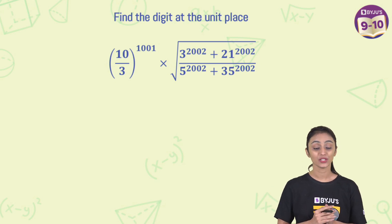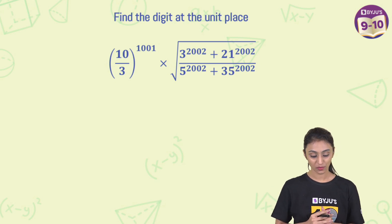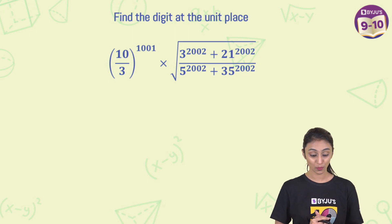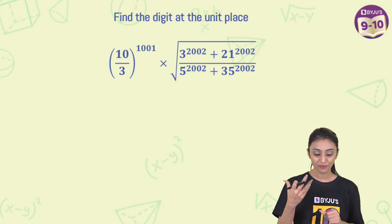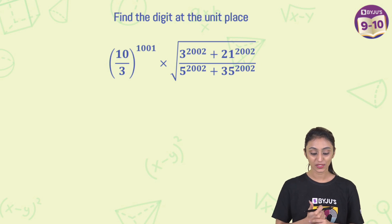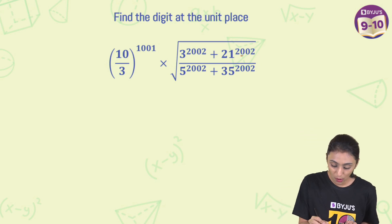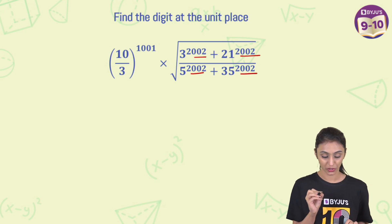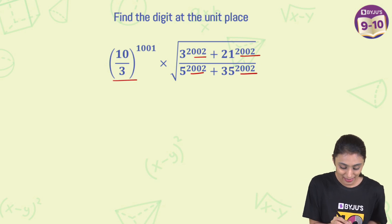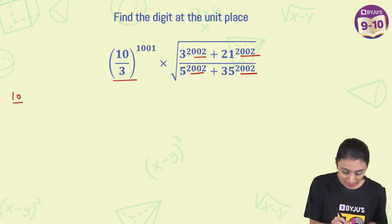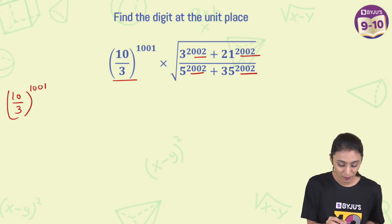So the expression is: (10/3) to the power 1001, times the square root of (3 to the power 2002 plus 21 to the power 2002), upon (5 to the power 2002 plus 35 to the power 2002). If you see, all of them have got the same powers. So I'm going to keep the (10/3) to the power 1001 part as it is.